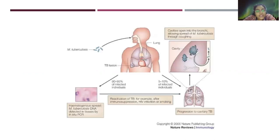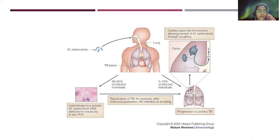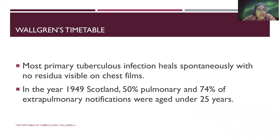This is a pictorial presentation of primary tuberculosis where a person usually inhales mycobacterium tuberculosis which settles in the lungs, causing a primary complex with hilar lymphopathy, mostly called the Ghon complex, where 10% of patients progress into cavitary TB while 90-95% have a hematogenous spread. In Walvin's timetable, most primary tuberculosis infections heal spontaneously with no residual visible on chest films.